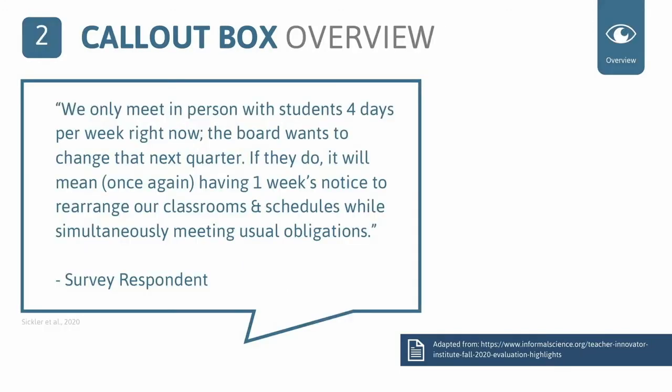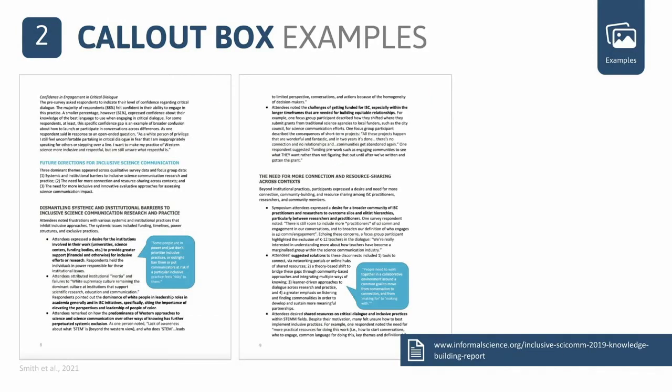Strategy number two is call-out boxes. Call-out boxes are a type of text box that also includes a line for pointing to any section on a document. This element can be effective for elaborating a statement with a quote or providing more context. Here is an example from InformalScience where Smith used a call-out box to include qualitative quotes for specific practices outlined in the report. In a full check-in report created by Sickler and colleagues, call-out boxes were a design element to outline answers to qualitative responses.